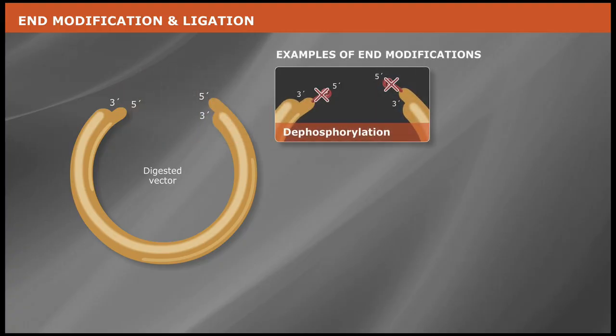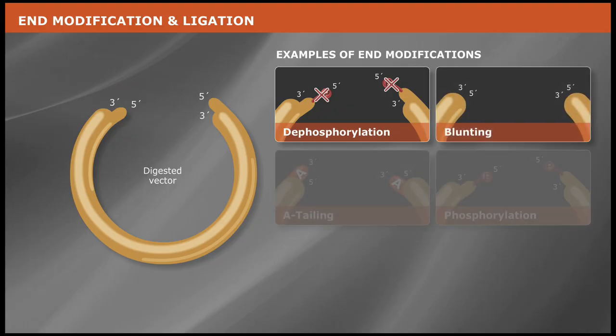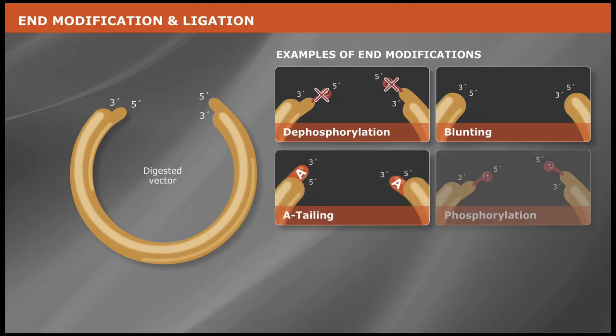Depending on how you generate your vector and insert, other end treatments may be required. These include blunting, a-tailing, and phosphorylation.